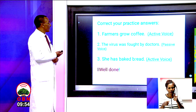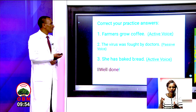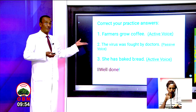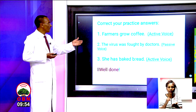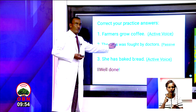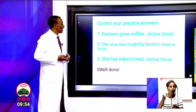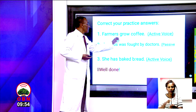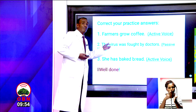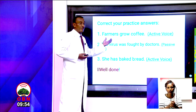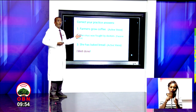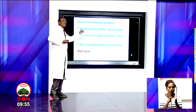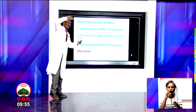Number two: the virus was fought by doctors. This is passive. For one thing, the auxiliary verb 'was' is used. For another reason, what happened to the virus is being talked about — we talk not about the doers, the doctors, but about the virus — the thing that doctors fought.